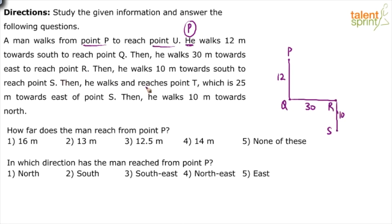When he is at point S, he walks and reaches point T, which is 25 meters east of point S. Point T is 25 meters east of point S. So east of point S is this side. How much? 25 meters. This is point T.